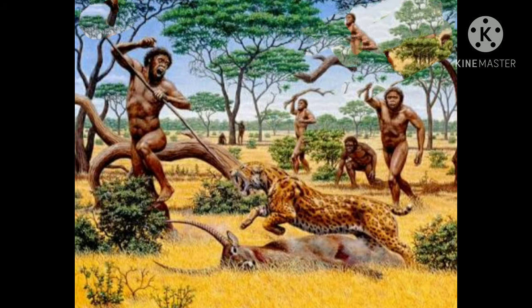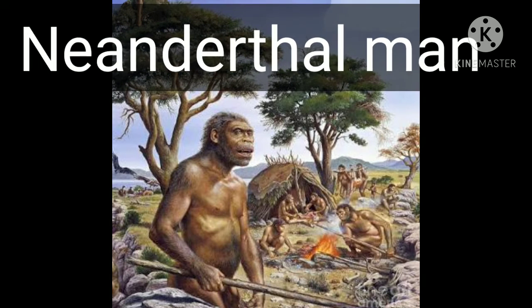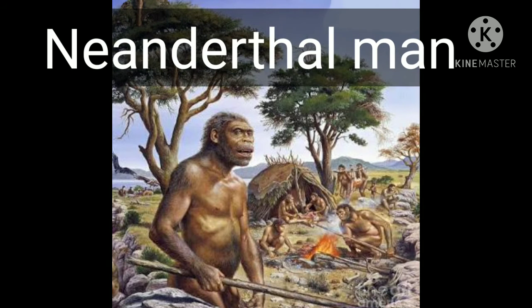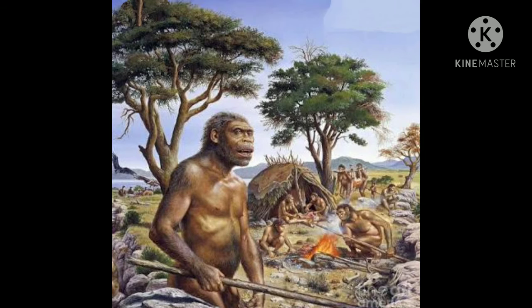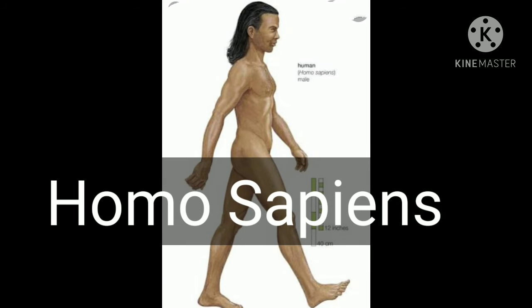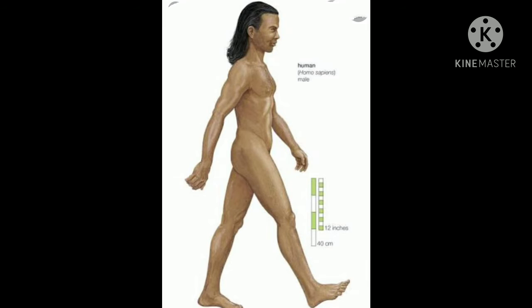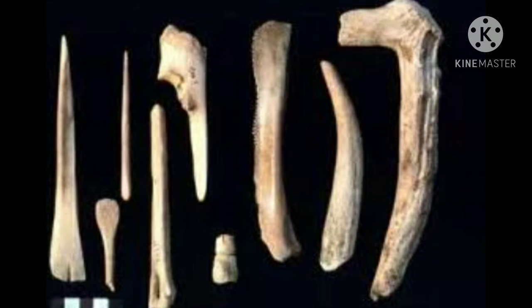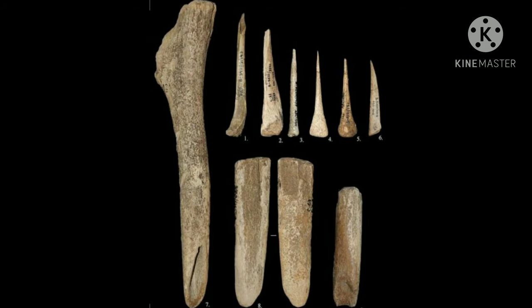The Neanderthal man made further progress in tool making techniques and began to make smaller tools. Homo sapiens brought about a revolution in the technique of making tools. He devised a technique of obtaining long and narrow blades of stone, and made various implements like the knife, scraper, borer, and chisel from these long blades.